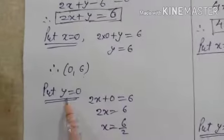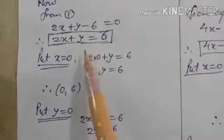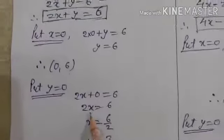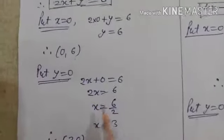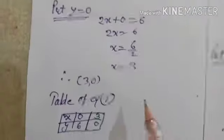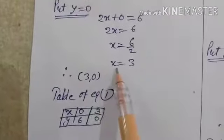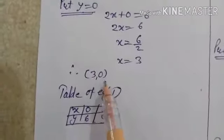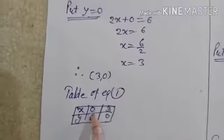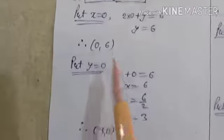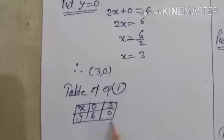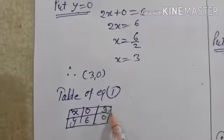Now put y equal to 0: 2x plus 0 equals 6, so 2x equals 6. Transferring 2 to the right side gives x equals 6 by 2, which is 3. So the second point is x equal to 3, y equal to 0, i.e., (3, 0). Table for equation 1: first point (0, 6) and second point (3, 0).